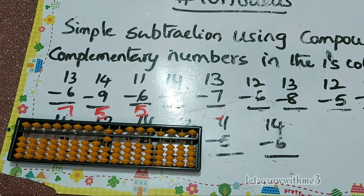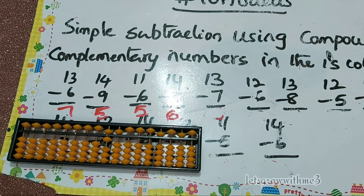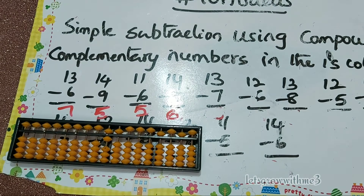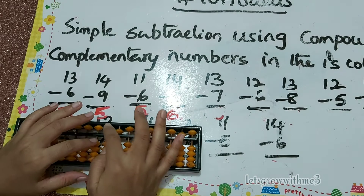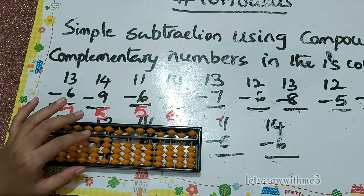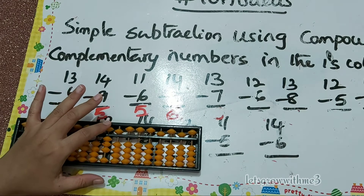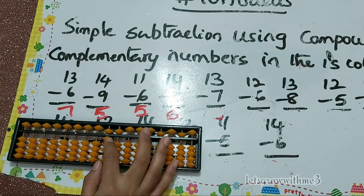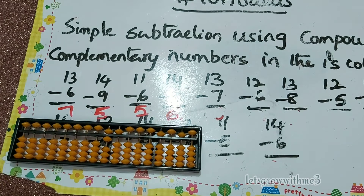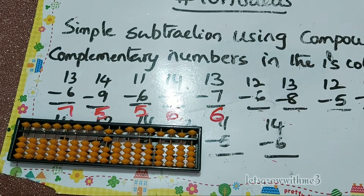Papa down, mama down, baby down — so the answer is 6. The question is 14 minus 8. Next: 13 minus 7. Papa down, mama down — 7 has 2 babies, so 2 down. The answer is 6.